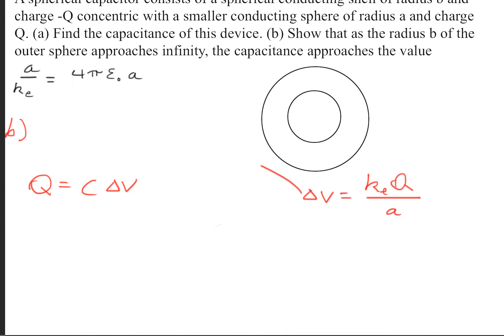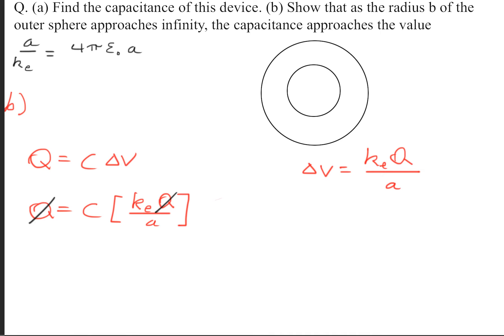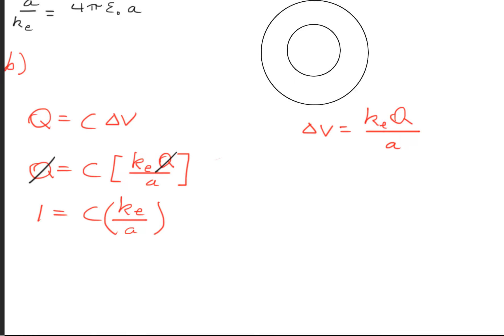With this new value, we're going to make another substitution. After we do our substitution, we can simplify this equation by canceling Q on both sides, leaving us with 1 = C·k_e/a. Now we'll rearrange this to solve for C = a/k_e.